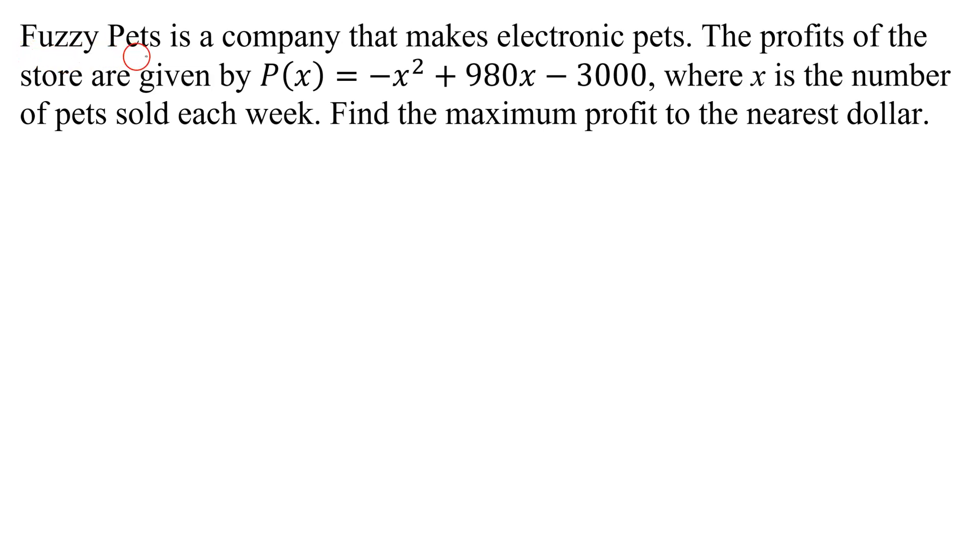In this problem, we know that Fuzzy Pets is a company that makes electronic pets. The profits of the store are given by P of X equals negative X squared plus 980X minus 3000, where X is the number of pets sold each week. Find the maximum profit to the nearest dollar.